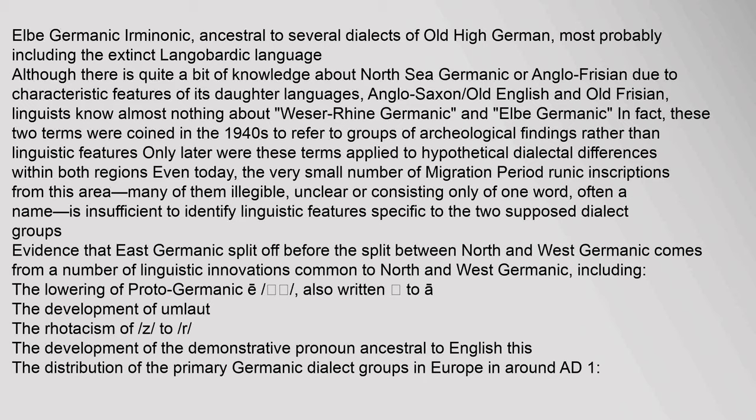In fact, these two terms were coined in the 1940s to refer to groups of archaeological findings rather than linguistic features. Only later were these terms applied to hypothetical dialectal differences within both regions. Even today, the very small number of migration period runic inscriptions from this area — many of them illegible, unclear, or consisting only of one word, often a name — is insufficient to identify linguistic features specific to the two supposed dialect groups.